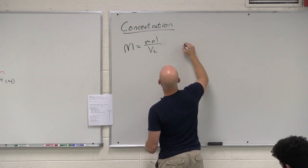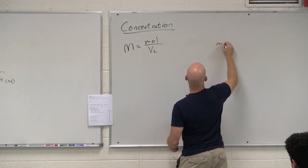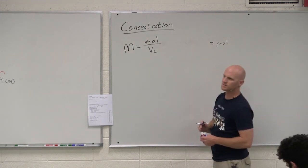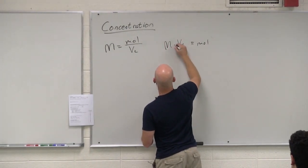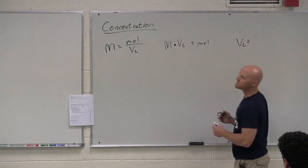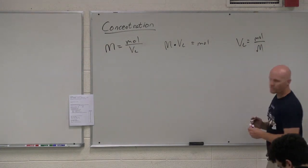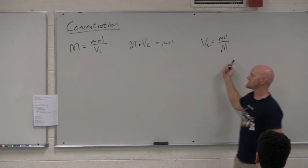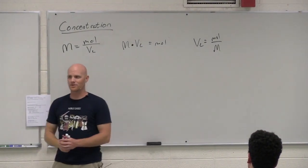But what if I wanted to solve for moles? What would moles be equal to? Good. Molarity times liters. So, and if I want to rearrange this yet again and solve for the volume in liters, what would that equal? Moles over molarity. Moles over molarity. So in this case, you've got three variables. If I give you two, you should be able to solve for the third one.